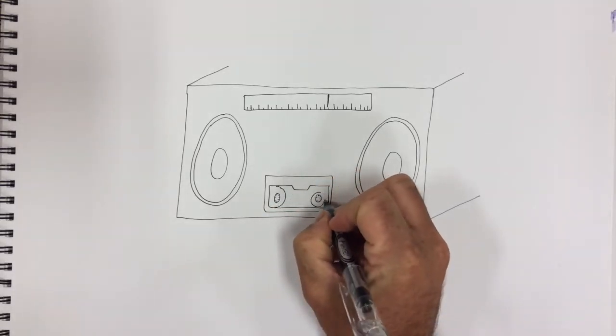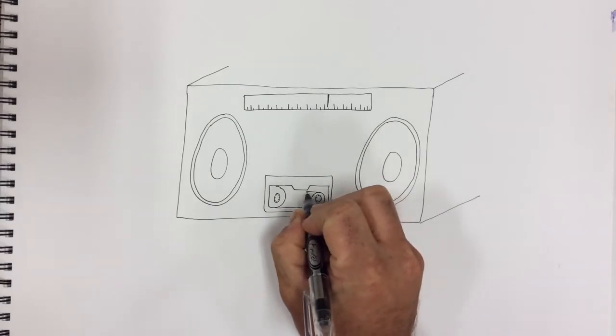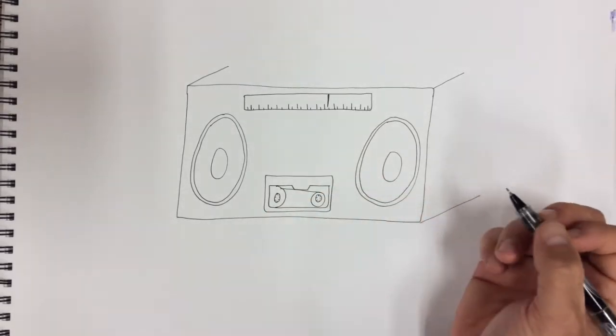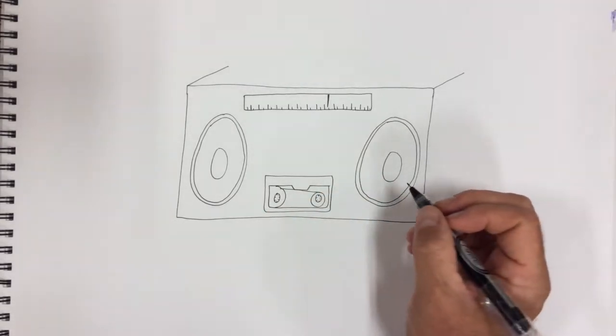And this circle, you put one big circle and one small circle and that's the reel of the tape. So it goes from one wheel to another. And that's what played the music.